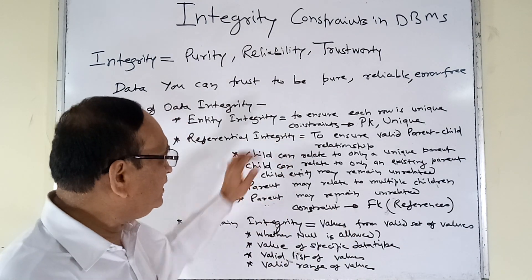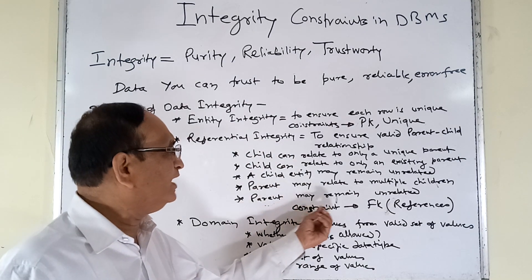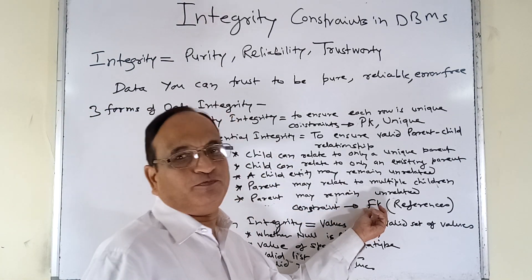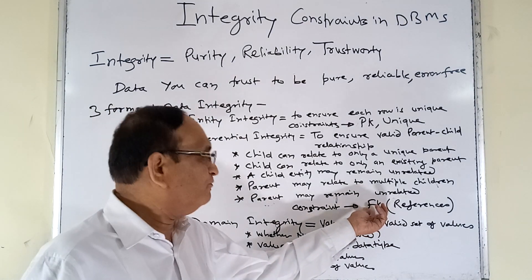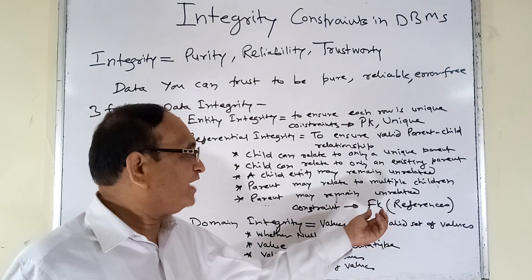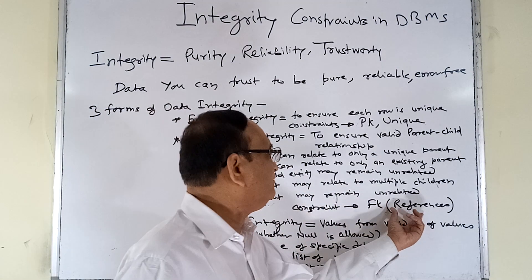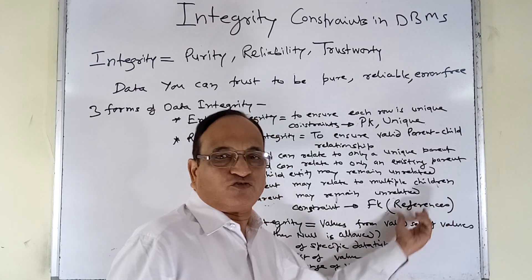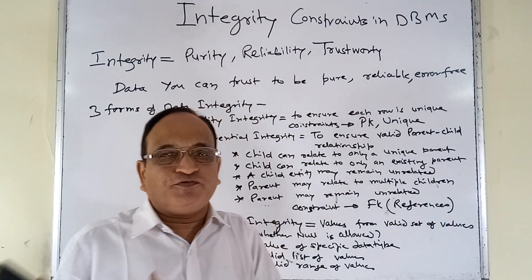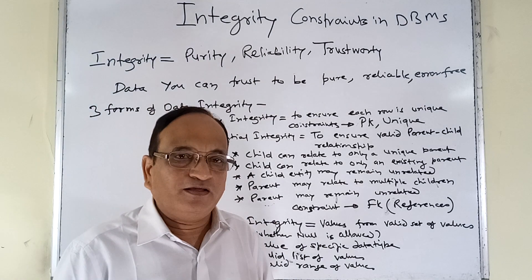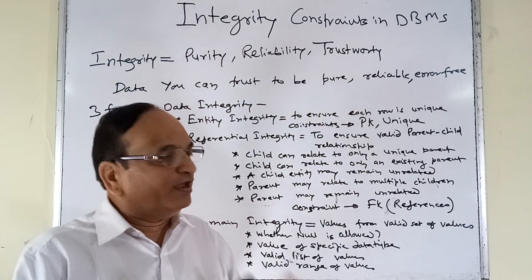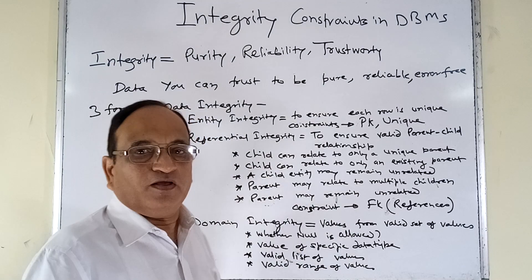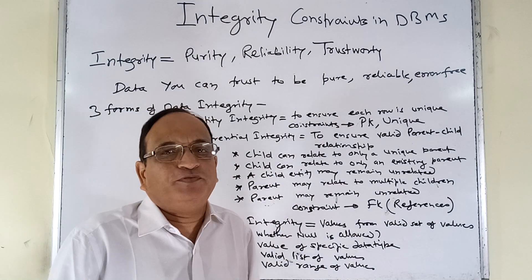Referential integrity is implemented through a constraint called a foreign key. In common usage we call it a foreign key, but the scientific name for this constraint is the references constraint, because we are creating a reference from the child entity to the parent entity. We will see how to actually create these constraints in the second part of this topic.